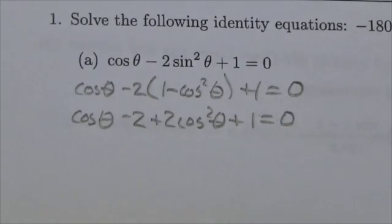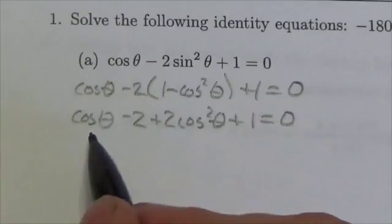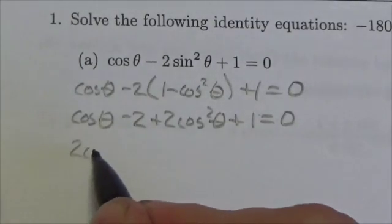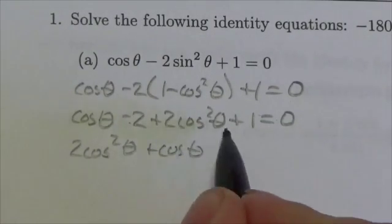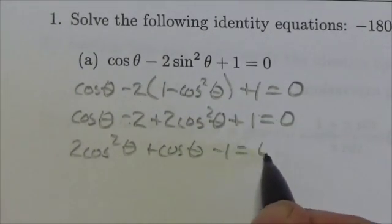The benefit here is that everything is in terms of cosine. So now I'm going to reorganize this, make this 2 cosine squared of theta plus the cosine of theta. And I've got a negative 2 and a positive 1, so minus 1 equals zero.